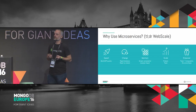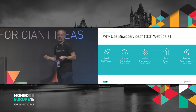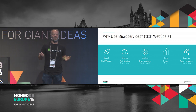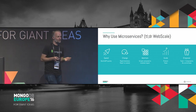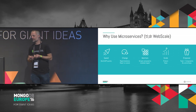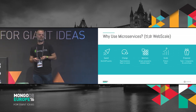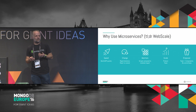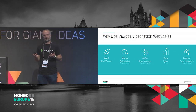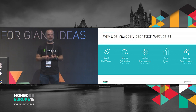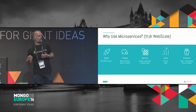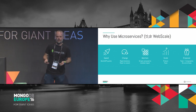Why use microservices? They were originally called micro web services, and some of the huge web properties started adopting this kind of architecture as a way to really scale out — both how quickly they can roll out their software and also how large they can scale it to be.